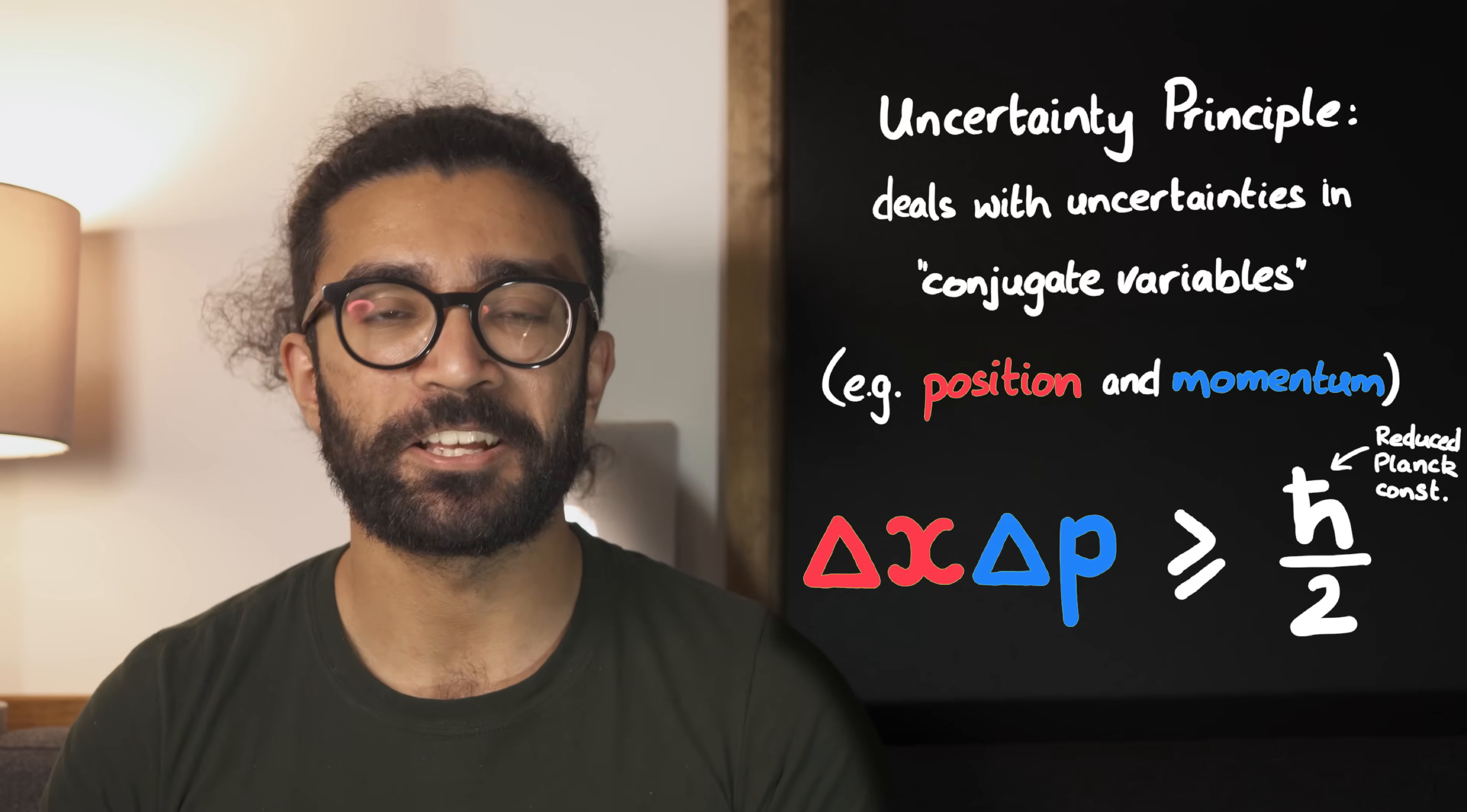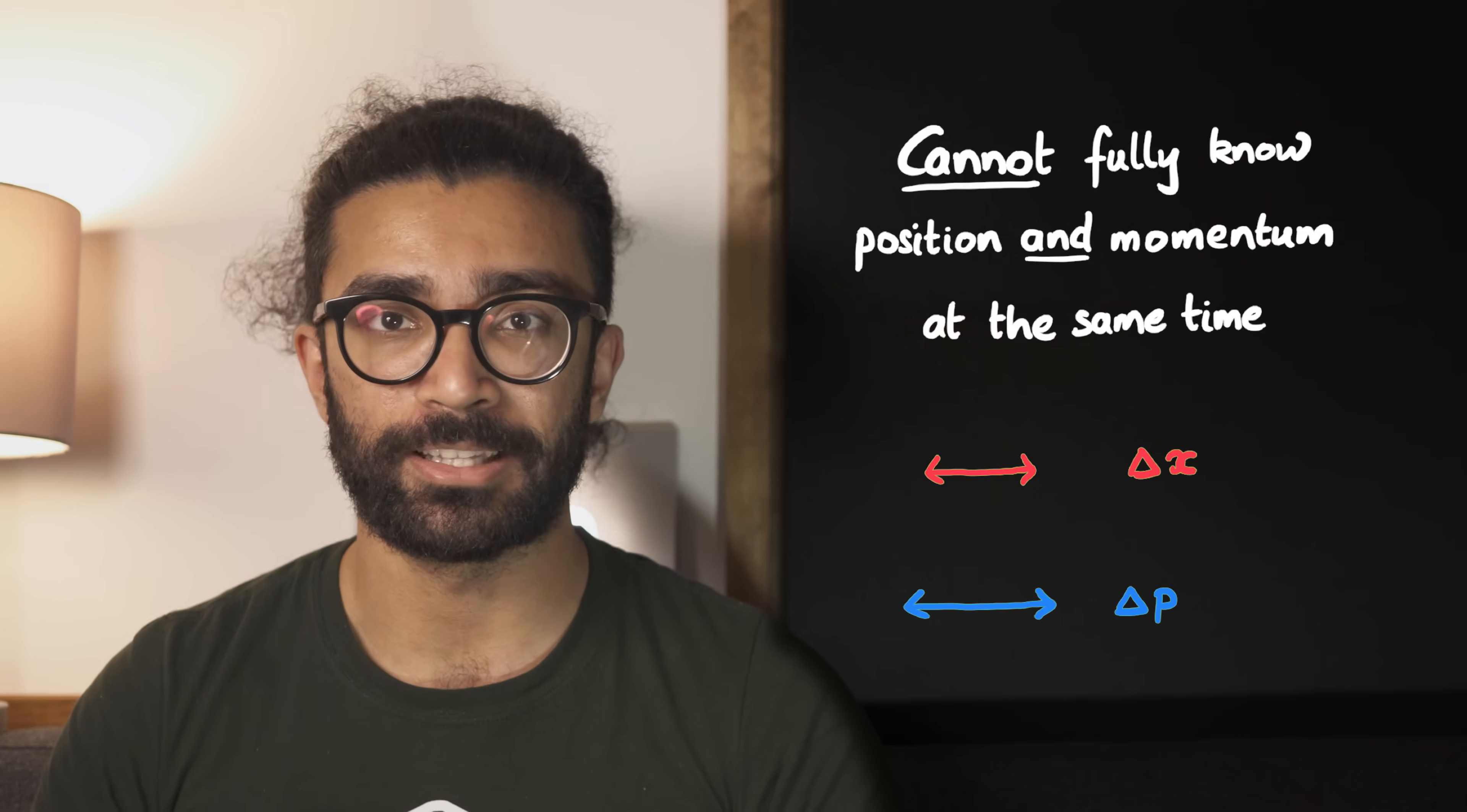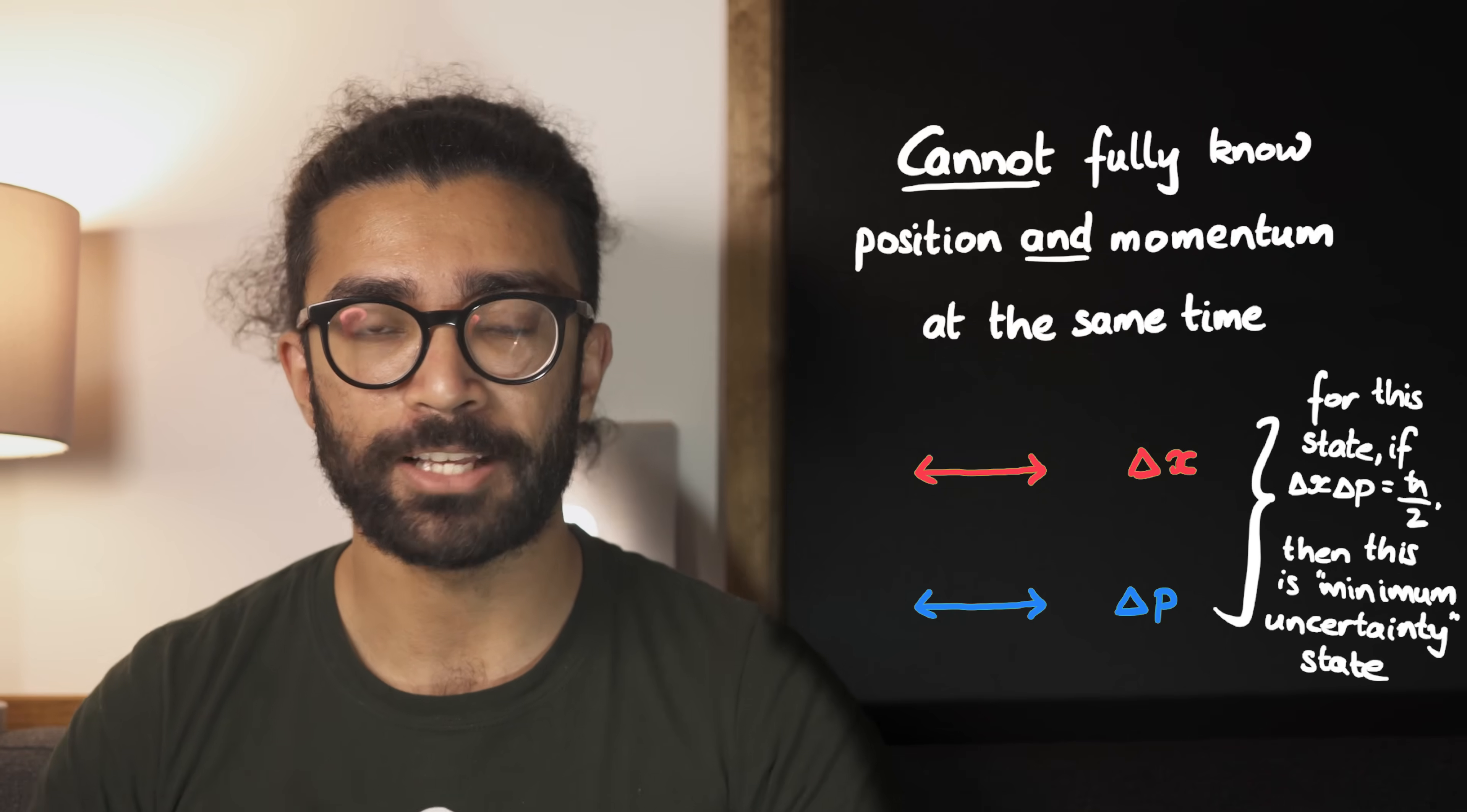Another way to think about this is that we cannot know exactly the position and the momentum of a particle at the same time. The more we know about one, the less we know about the other. Even in a minimum uncertainty state, where the product of these uncertainties is as small as possible.